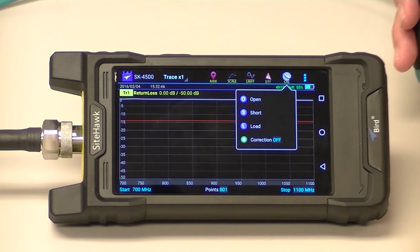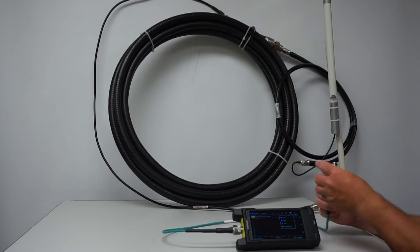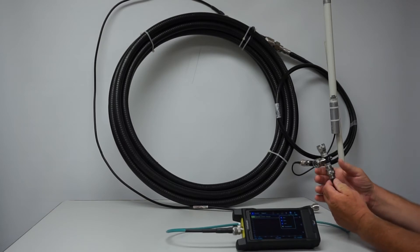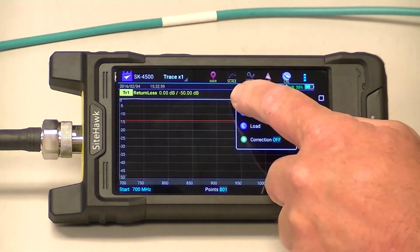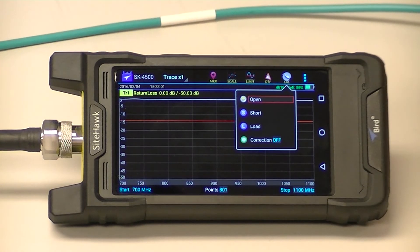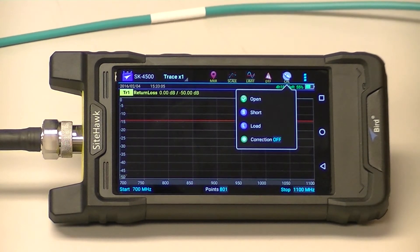So you tap on the CAL menu and you get the drop box that comes up. The first thing I want to do is connect my OPEN of the CAL combo to my test cable. I would press OPEN. It's going to sweep and I'll get a green circle with a check mark in it.